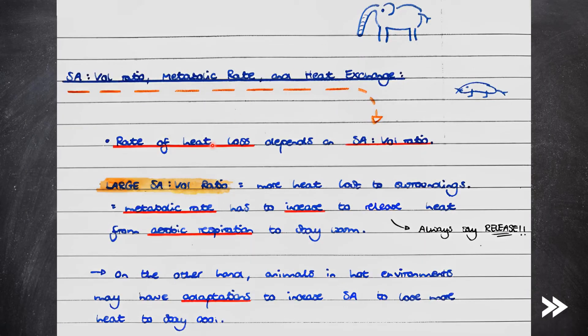The rate of heat loss is another thing which is affected by surface area to volume ratio. If an organism has a large surface area to volume ratio, take a mouse for example, more heat is lost to the surroundings. Therefore, the metabolic rate of the organism has to increase to release enough heat energy from aerobic respiration to stay warm.